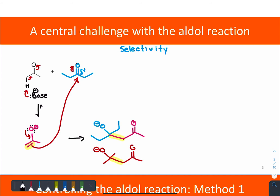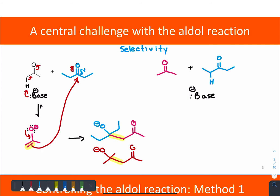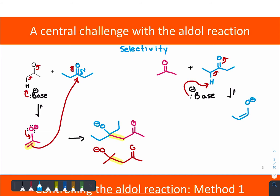The problem is actually even worse than that. If we go back to the starting molecules and mix in the base, how do we control for the fact that the base removes one alpha proton over another? Knowing about differences in pKa, there would be very little difference between the two, so we'd really get a mixture of all these products. When that new enolate forms, it can again react with either of those electrophiles.